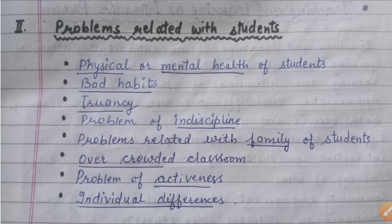The next point is problems related with the family of students. Some children come from families where there is no emotional stability at home. If they have problems at home, they will not be able to learn. The next point is overcrowded classroom — when there are too many children, teachers cannot give attention to each child, and this creates problems in classroom learning.